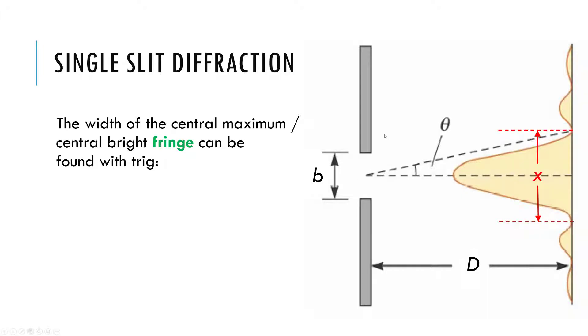Okay, last kind of thing that the IB likes to ask you to do. It's pretty common. You know, the angle is not necessarily easy to measure, you can imagine, because you have this pattern on a wall. What's very easy to measure, though, is how wide the bright spot is. You can get a ruler and just measure it.